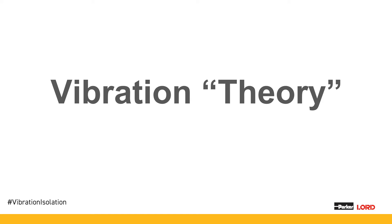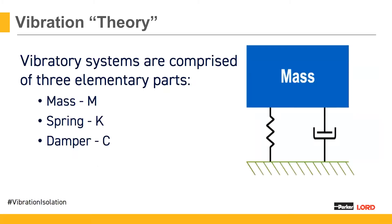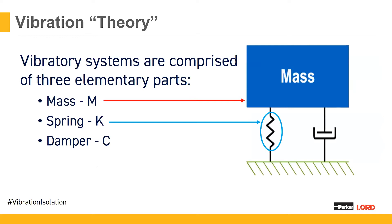Let's jump right in and start with our vibration isolation theory. At the basis of every vibration system, we have three main components: mass, which could be a cab, a computer system, or in this case we're focusing mainly on an engine system; a spring; and a damper. We'll drill down into that spring and the damper portion on these next few slides.